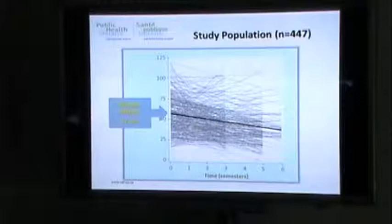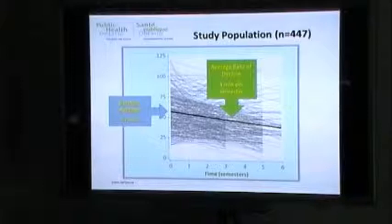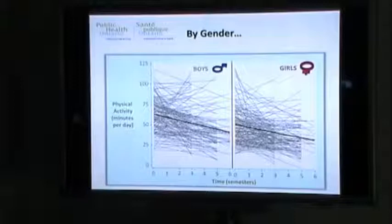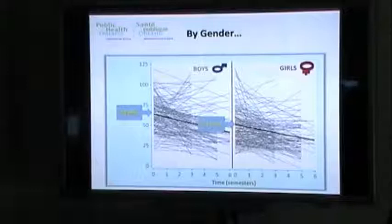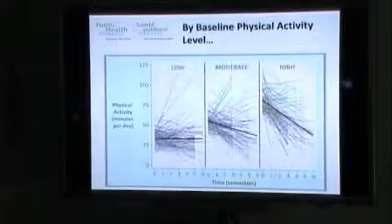The average baseline physical activity level of grade 9 and 10 students was 57 minutes, and the average rate of decline was 3 minutes per semester over 6 semesters. Looking at the data by gender, there was a significant difference in baseline physical activity levels of boys compared to girls, but the rate of change over time was not significantly different.